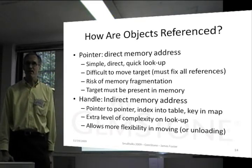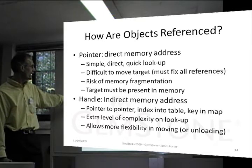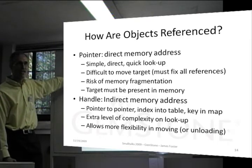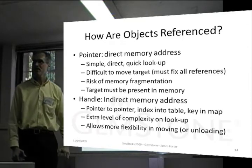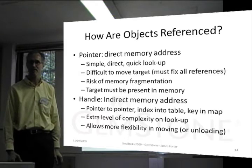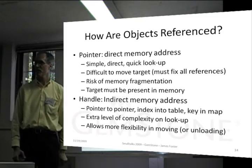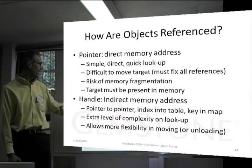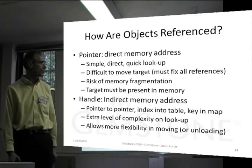There's a risk of memory fragmentation. If you allocate a chunk of space here for an object, allocate another one, and then free this one, that space is left unused. Unless you can find something that fits in that space, you'll end up with fragmented memory — pieces of memory scattered at different places. And for a direct memory address to be meaningful, the target must be present in memory, which means that you can't unload it to disk. That is a characteristic of a pointer, but still fast, direct, quick.